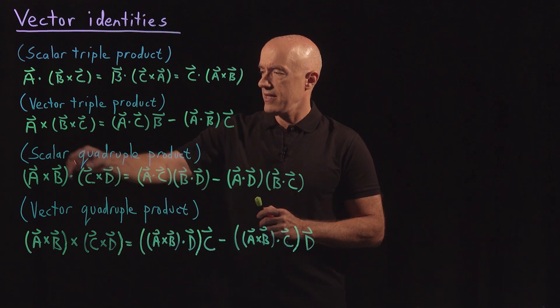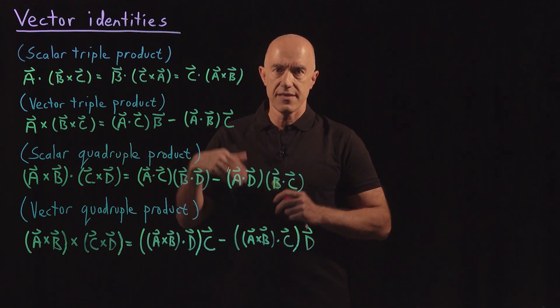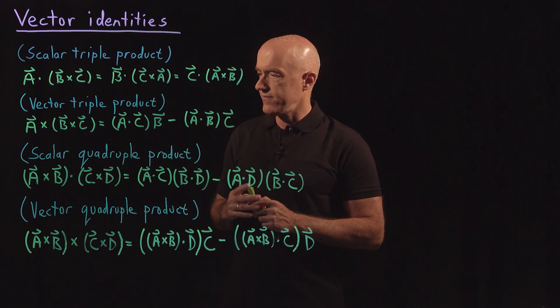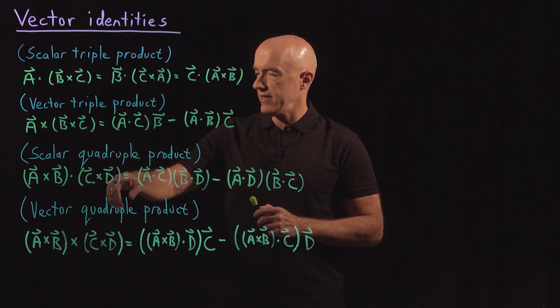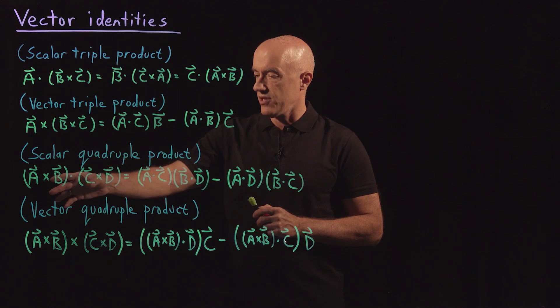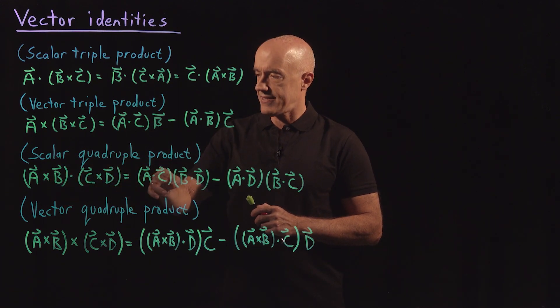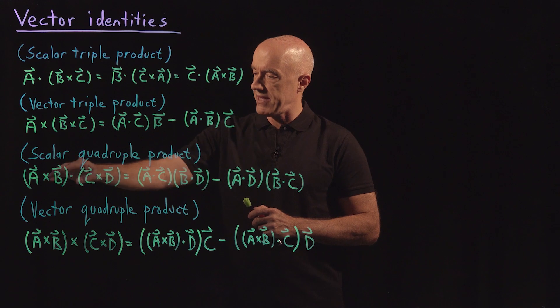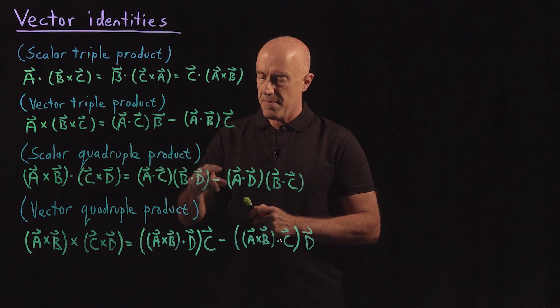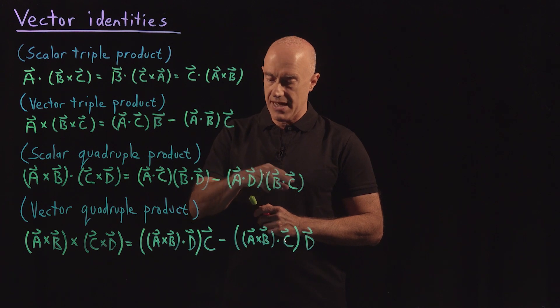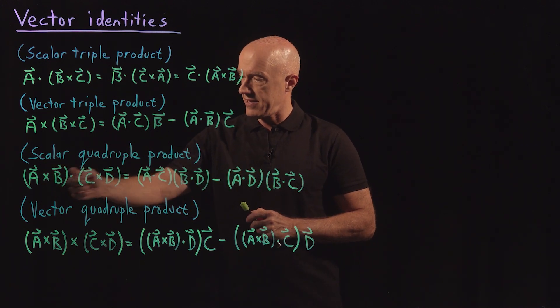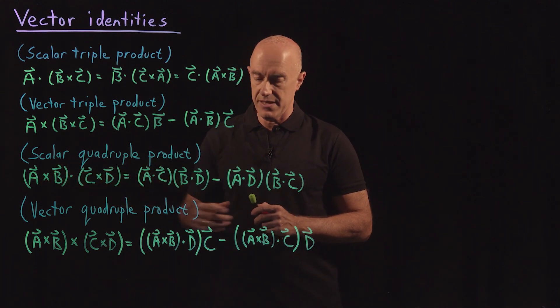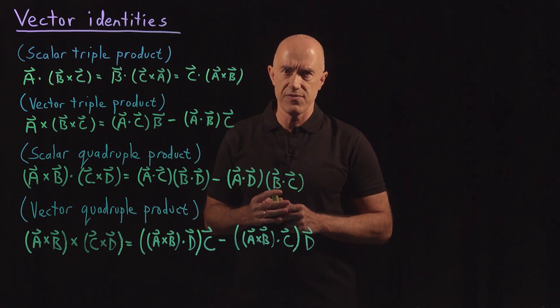The third identity is the scalar quadruple product. That's a scalar vector identity. Quadruple means that there are four vectors involved. Here (A cross B) dot (C cross D). So it's a vector dot a vector, which is a scalar. That's equal to (A dot C), which is a scalar, times (B dot D), which is also a scalar, minus (A dot D) times (B dot C). So (A dot C)(B dot D) minus (A dot D)(B dot C). So all these have some type of symmetry if you look at them carefully.